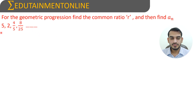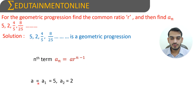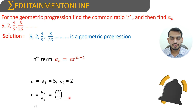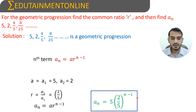This is a geometric progression. We need to find R and An. The series is 5, 2, 4/5, 8/25, and so on. Using the nth term formula A into R power N minus 1, A equals 5 and A2 equals 2. The common ratio R equals A2 by A1, which equals 2/5. Therefore An equals 5 into (2/5) whole power N minus 1.